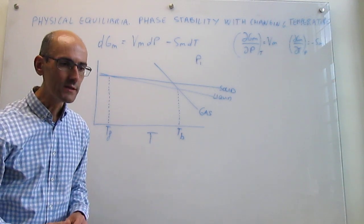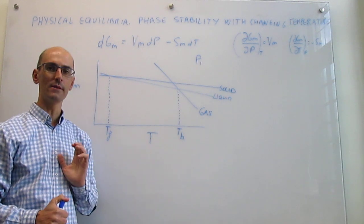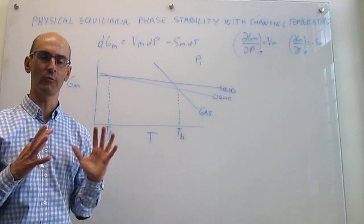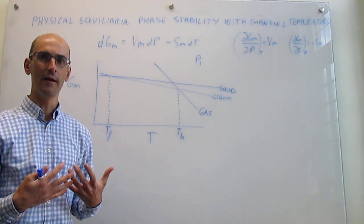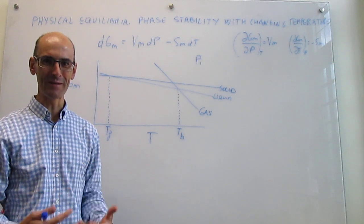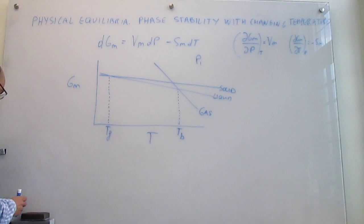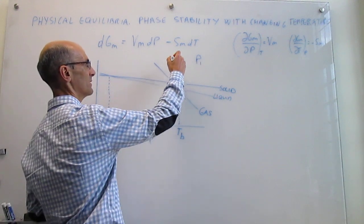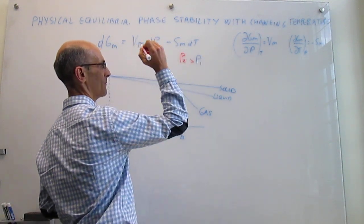The question then is whether you can affect the boiling point and the freezing point of this substance by changing the pressure. We are going to take this graph and now build on top of it the lines for a different pressure, and see if there is something that we can learn from it. I am going to decide that the pressure now increases to P2, so P2 is going to be larger than P1.